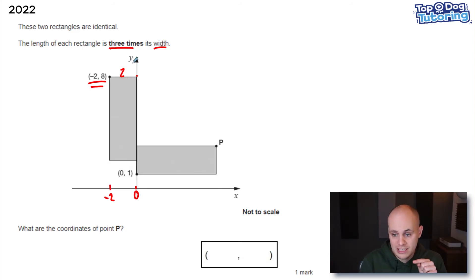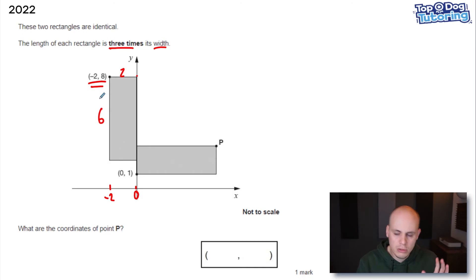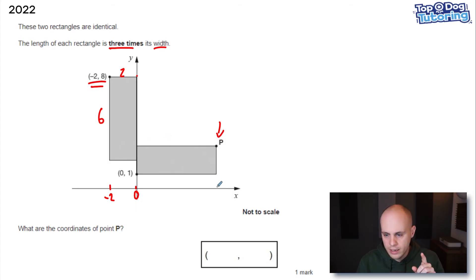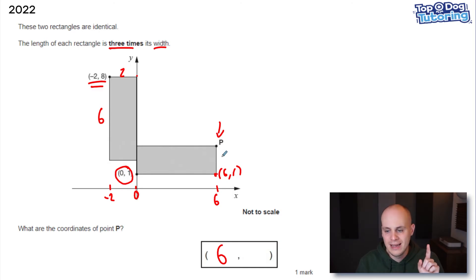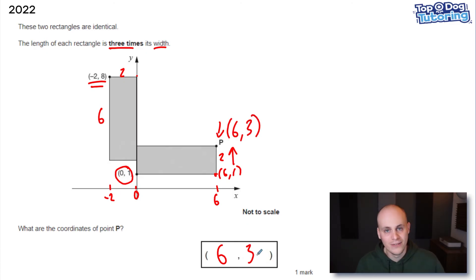That tells us the width of this rectangle is two. We can times it by three to get the length: the length must be six. I can transpose this information down to the bottom rectangle, where I'm trying to find the coordinate of P. The length is six, so I'm going six across on the x-axis — that's the first part of my coordinate. For the height, this coordinate tells me we're starting at one. So the corner would be (6, 1), but P is two higher because the width is two, making the final answer (6, 3). Such a great question.